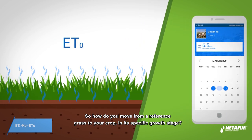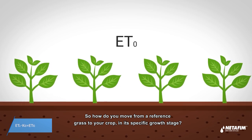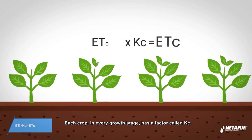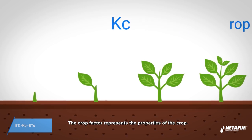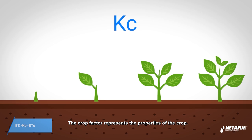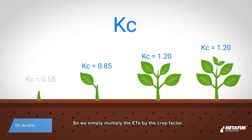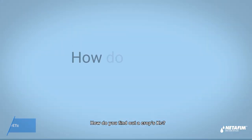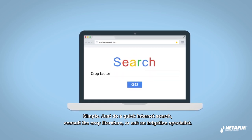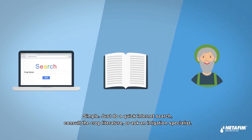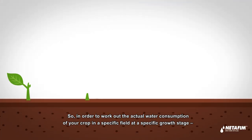How do you move from a reference grass surface to your crop at its specific growth stage? Each crop at every growth stage has a factor called Kc — the crop factor. It represents the properties of the crop, so we simply multiply ETo by the crop factor. To find a crop's Kc, just do a quick internet search, consult the crop literature, or ask an irrigation specialist.